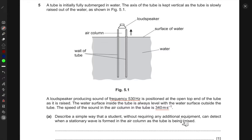Part (a): Describe a simple way that a student, without operating any additional equipment, can detect when a stationary wave is formed inside that air column as the tube is being raised. If this is a closed end, there would be a node forming at this end, so the wave would look something like this.